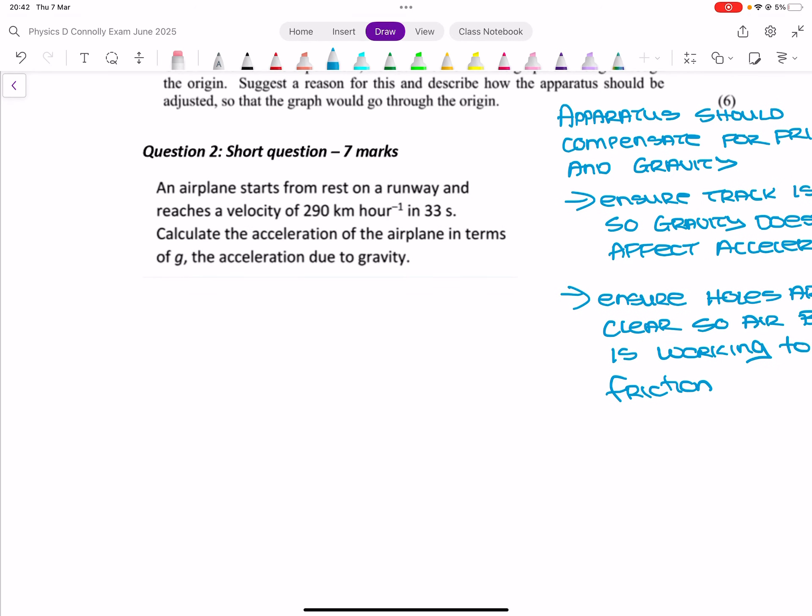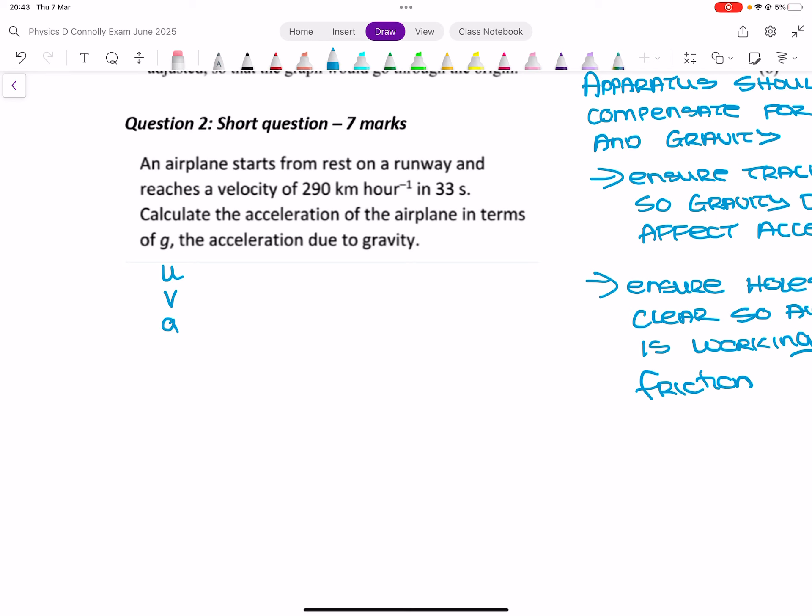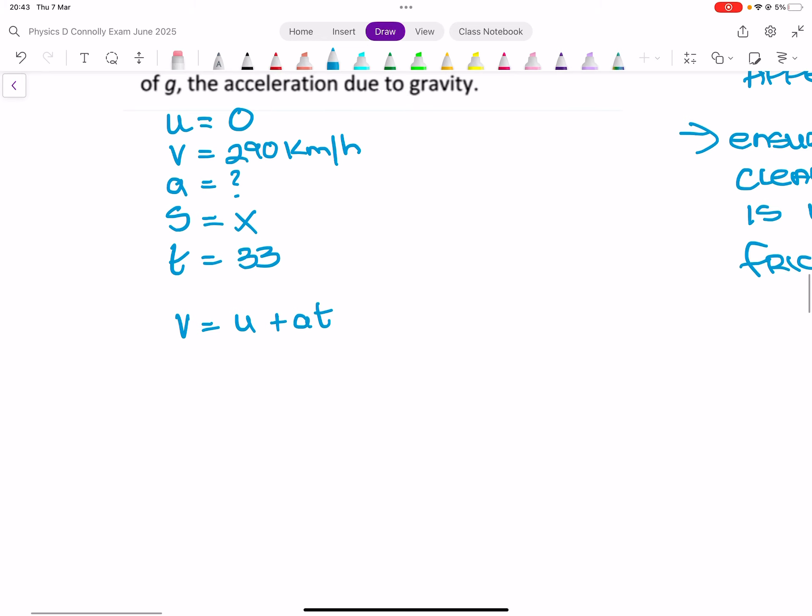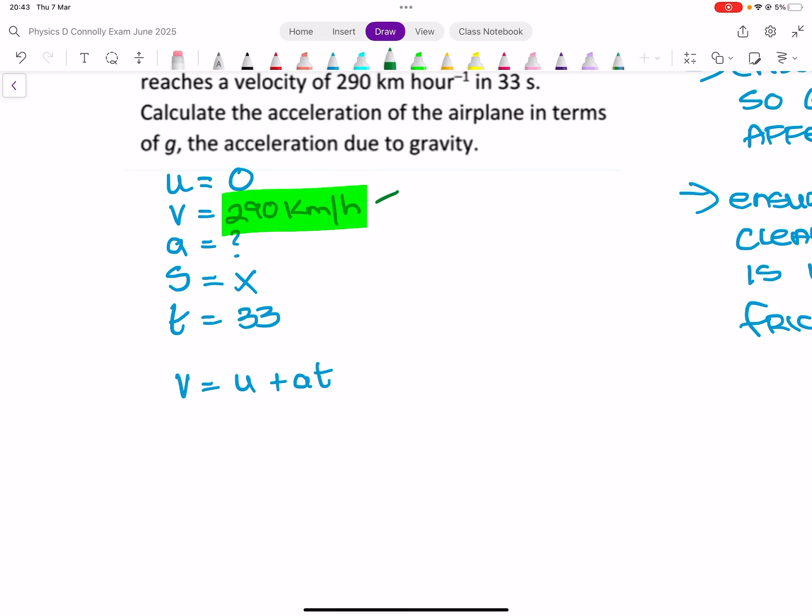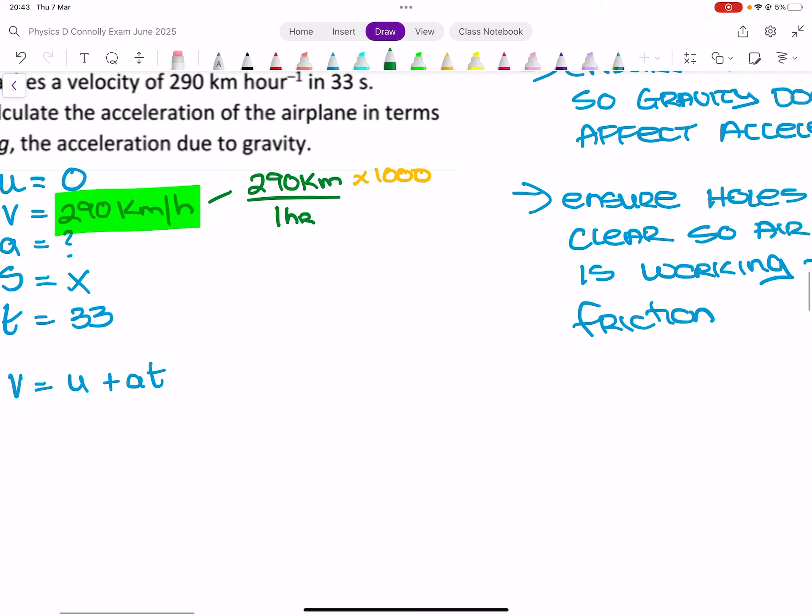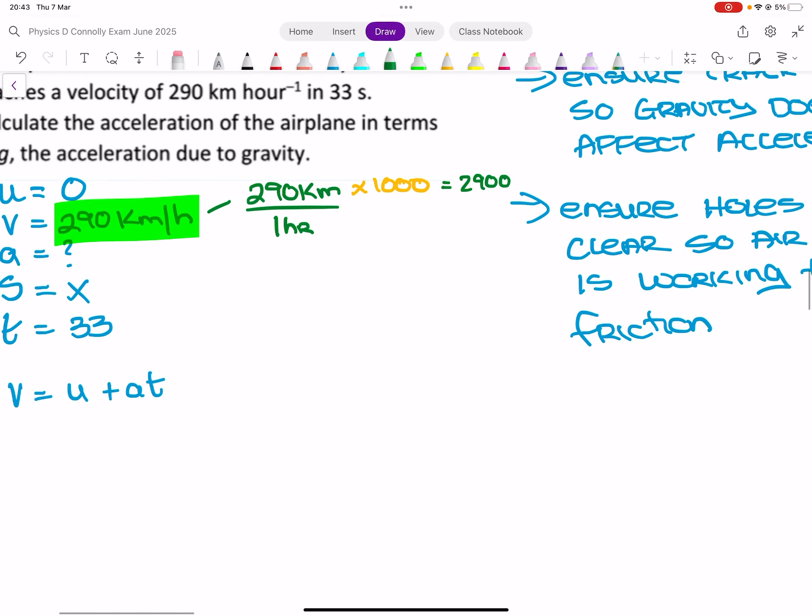I'm going to do this. If my iPad allows it, then I'm going to have to call it. So, an airplane starts from rest on a runway and reaches a velocity of 290 kilometers per hour in 33 seconds. Calculate the acceleration of the plane in terms of G, the acceleration due to gravity. So, it feels like a U vast. So, the initial velocity is 0. The final velocity is 290 kilometers per hour. The acceleration is what we're looking for. S, we don't know. And T is 33. So, V equals U plus AT. Now, I cannot use that V like that in kilometers per hour.